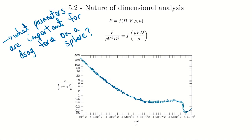The question is: what parameters are important for the drag force on a sphere traveling through a fluid — like a baseball, golf ball, or sphere dropped into a fluid bath? Take a moment to think about it. As engineers we want to know what influences the drag because we're designers — we might want a sphere to travel through air as easily as possible, or we might need it to sink quickly in a fluid bath.